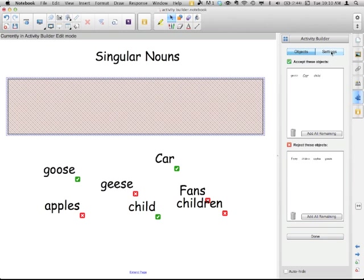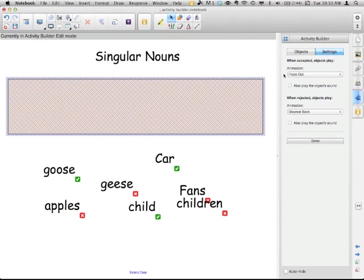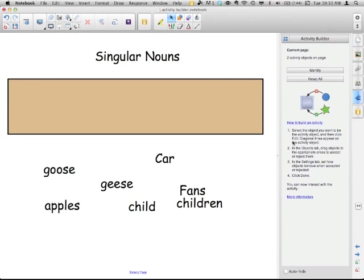So what's going to happen? By default, anything that you want in there is going to fade out. And anything that gets rejected is going to bounce back. So, geese. Nope. Bounces back. Car. Yeah, that fades out. Children. Bounces back. Child. Fades out. Disappears.